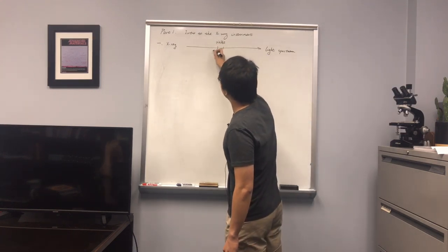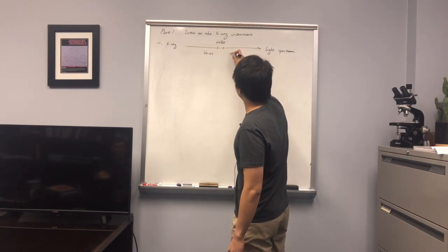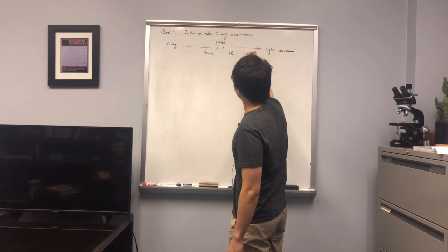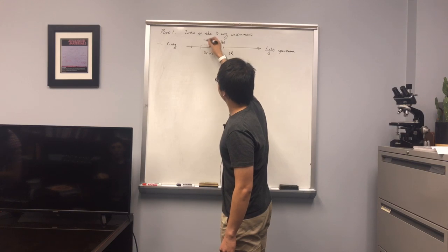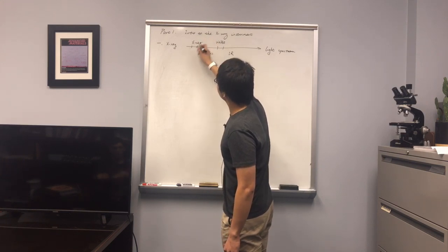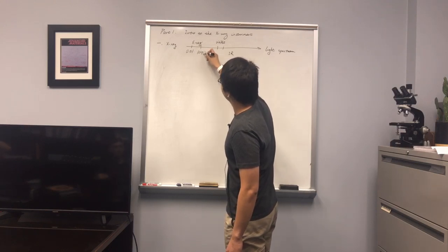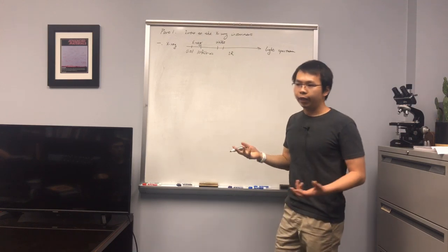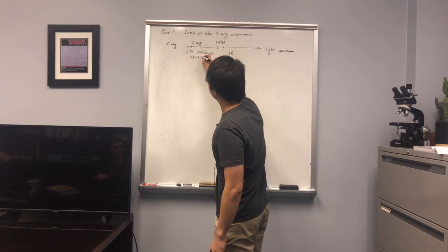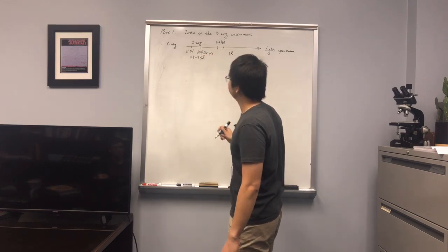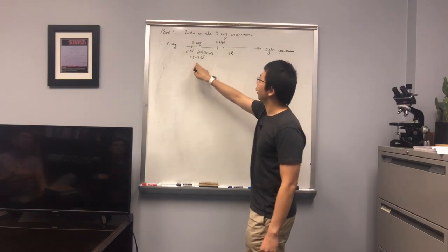Above that you've got UV waves, and below that you've got IR and microwave. So x-ray actually sits below UV waves. The wavelength of x-ray is typically around 0.01 to 100 angstroms. For lab-based x-ray, we use a wavelength from 0.5 to 2.5 angstroms. Our tool uses copper as the x-ray source, giving us 1.54 angstroms.